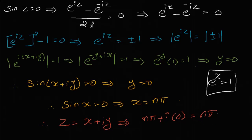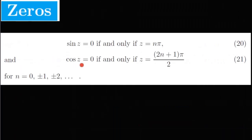So z equals nπ + i·0, that is z equals nπ. Similarly, for cos(z) = 0, z is equal to (2n+1)π/2.